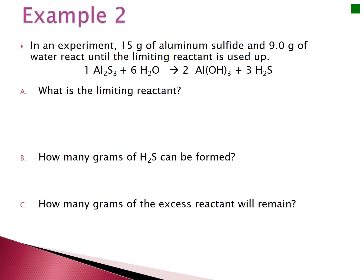Let's try another example using aluminum sulfide (Al₂S₃). I have 15 grams of aluminum sulfide and 9 grams of water. The question asks for the limiting reactant and how much H₂S can be formed. I can convert each reactant to either aluminum hydroxide or H₂S. Since a later question asks about H₂S, I'll convert both reactants directly to grams of H₂S to save time.